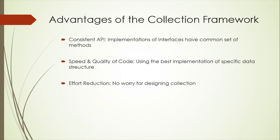To solve that specific problem, Collection Framework was introduced. The advantages of Collection Framework are: first, Consistent API — the API has a basic set of interfaces like Collection, Set, List, or Map, and all classes implementing these interfaces have a common set of methods, so we can use .get method uniformly. Second, Speed and Quality of Code — it increases performance by providing high-performance implementations of data structures and algorithms, so the programmer need not think of the best implementation. Third, Effort Reduction — a programmer doesn't have to worry about the design of Collection, but can focus on the programming logic.